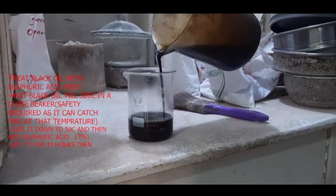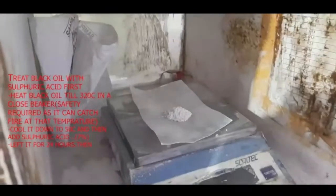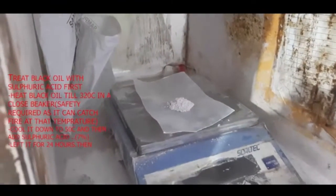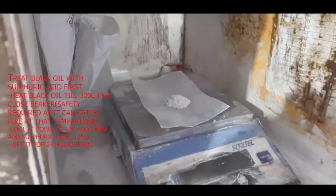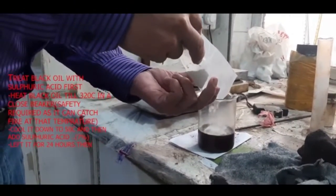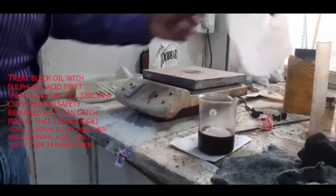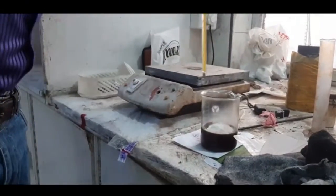We start with lubricant oil, then take 6 grams of bleaching earth. We add the 6 grams of bleaching earth to the lubricant oil and mix it well.